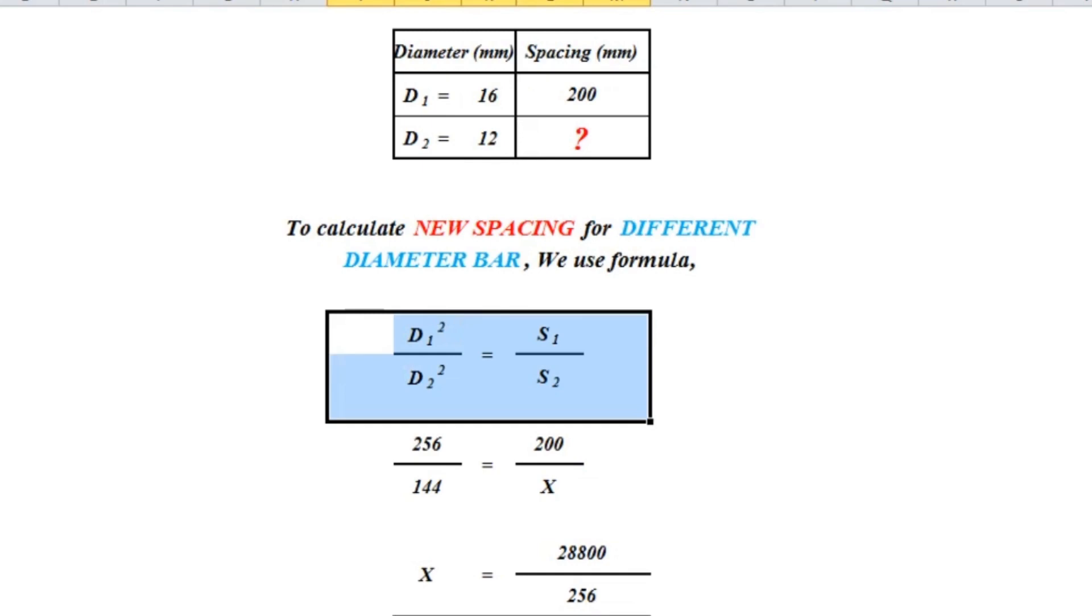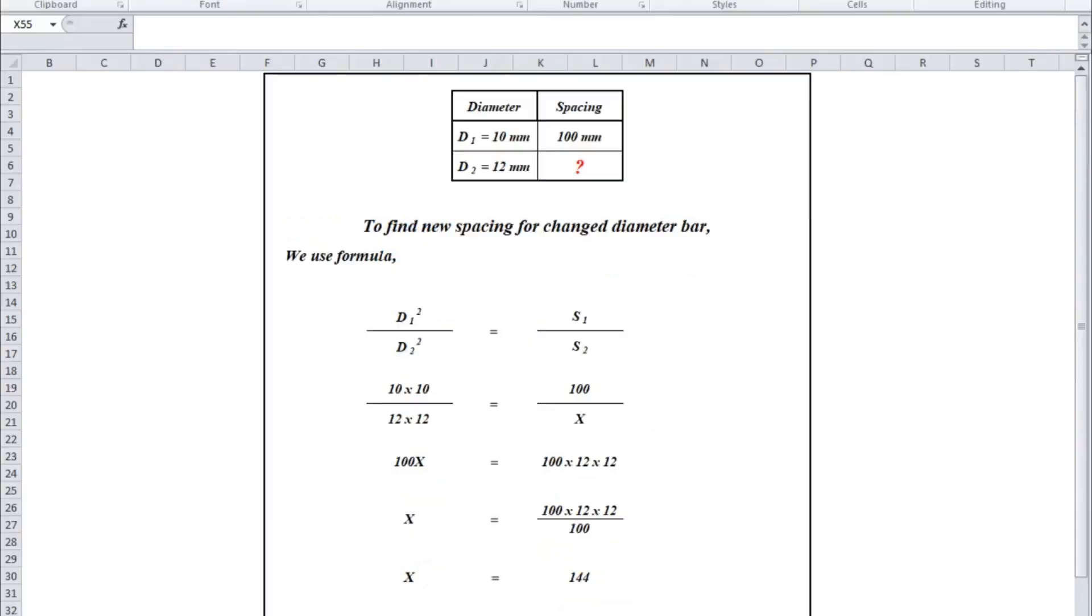D1² upon D2² is equal to S1 upon S2. After solving this equation, we will get our required new spacing.